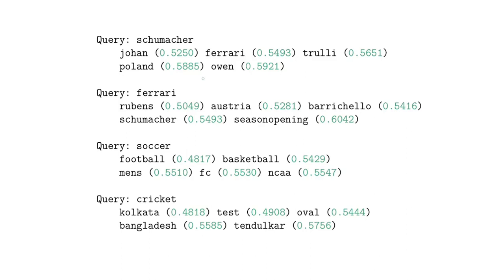Here are some more examples. You've got 'Schumacher' associated with 'Ferrari', and I think Trulli was another racer from a specific era in Ferrari's history. Similarly, Rubens Barrichello was Michael Schumacher's teammate for a long time, so Barrichello was associated with Ferrari as well. Just by looking at these things you can maybe even get an idea of the time frame in which this dataset was recorded.